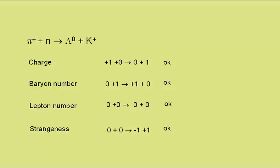In any questions, you will be given the charge, baryon number, lepton number, and strangeness of any particles involved — you won't be expected to remember these details. However, you will be expected to be able to work out whether the interaction is possible by laying out what the charge, baryon number, lepton number, and strangeness of the interaction is, to decide whether or not it can happen.